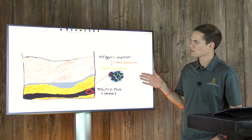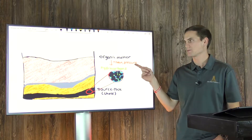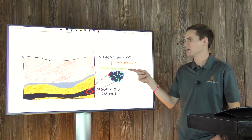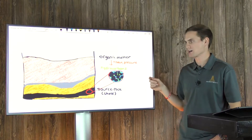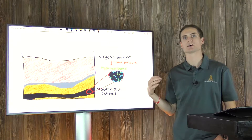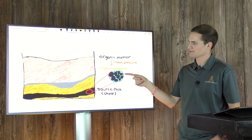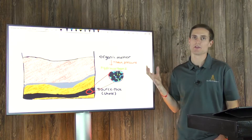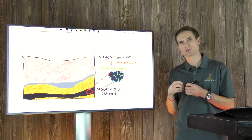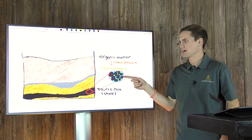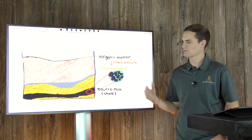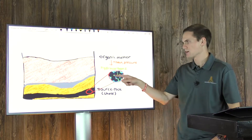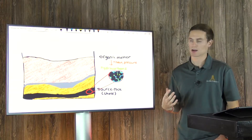Hydrocarbons are generated by heat and pressure. You have organic matter originally, and then with heat, pressure, and time it's going to generate hydrocarbons within the individual pore spaces of that rock. In this image, the different rock grains are shown in black, and the space in between those grains is where the hydrocarbons are going to be found. We refer to the amount of space there as porosity.